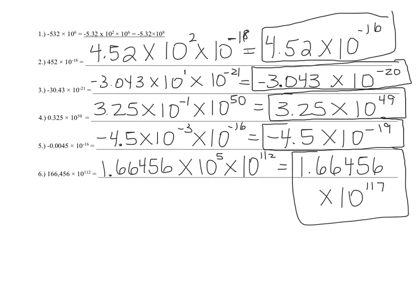The final answers are in the boxes. You're going to start to see me take shortcuts — I'll do part of the work in my head. If you need to write it out to get the answer, do it, but I'm giving you permission to take the shortcut. Look at the ones that had positive exponents: negative 532 had an exponent of 2, and 452 had an exponent of 2. These have positive exponents because they're big numbers to start with.